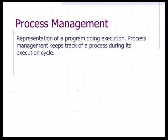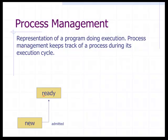Process management tracks a program doing its execution cycle. When a new process wants access to the CPU, it triggers a new process state. After that, it gets in line and enters the ready state. From the ready state, it moves into the running state, where it actually has access to the CPU and is running.